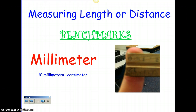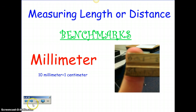Next, we have a millimeter. Ten millimeters equal one centimeter. So if a centimeter is the distance across the tip of your finger, a millimeter is about across the tip of your nail, because it's way smaller — you need 10 of them to make one centimeter. So a millimeter is smaller than a centimeter.